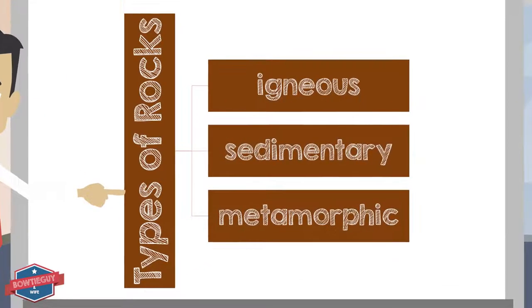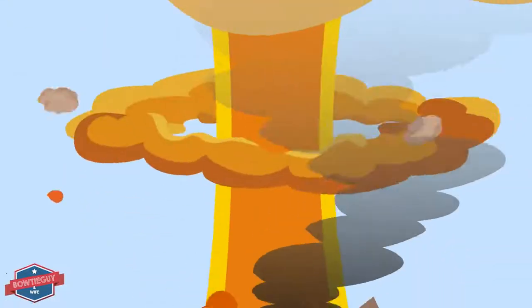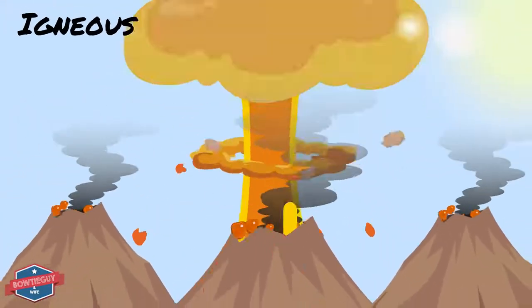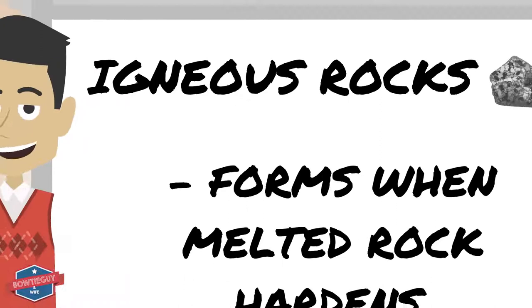Igneous, sedimentary, and metamorphic. First, let's talk about igneous rock. Igneous rock forms when melted rock cools.